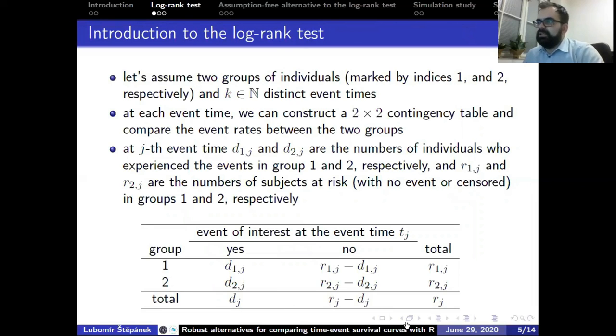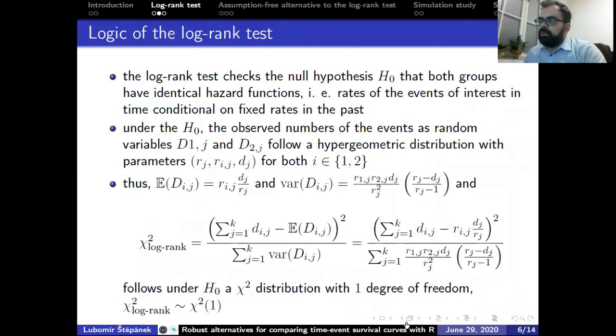The log-rank test compares the expected and observed numbers of events of interest in both groups of subjects across all time points where there is an event. At each event time, we construct a two-by-two contingency table and compare rates of events between the two groups, conditional on the number at risk in the groups, which covers all individuals who have not yet had the event or been censored. The log-rank test checks the null hypothesis that both groups have identical hazard functions.